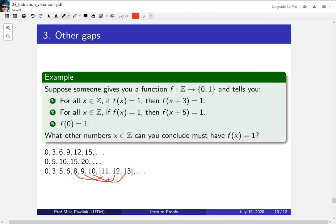So 14, 15, 16 will be 3 more than 11, 12, 13. And so in this way everything from 8 forward will have a value of 1.